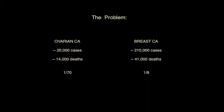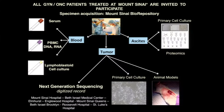The problem we focused on is ovarian and breast cancer. I'm showing here the number of cases, number of deaths, and prevalence in the population. At Mount Sinai, we've been focusing primarily on cancers, and we've set up a whole bioinformatic platform and biorepository to take samples as they come from the OR, directly bring them into the lab, start blood samples, cell lines, animal models, and collect ascites.